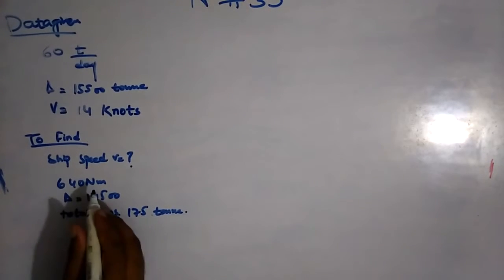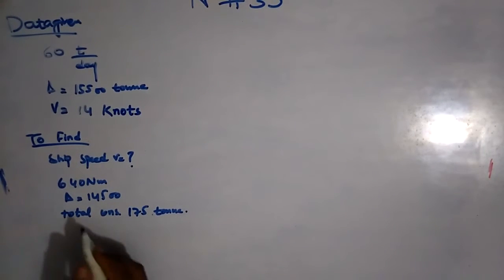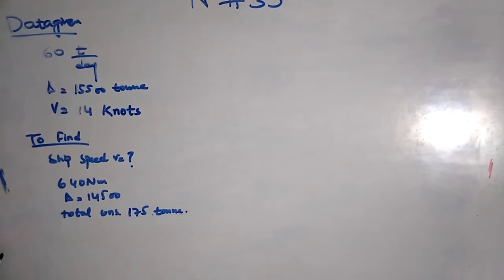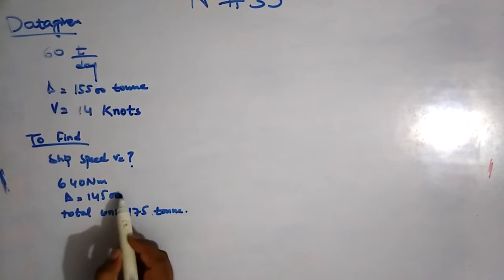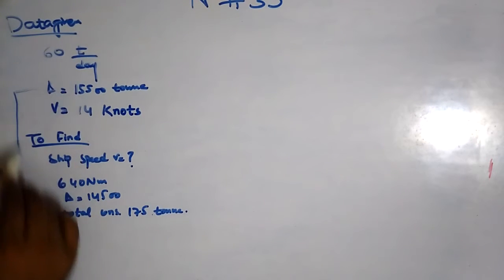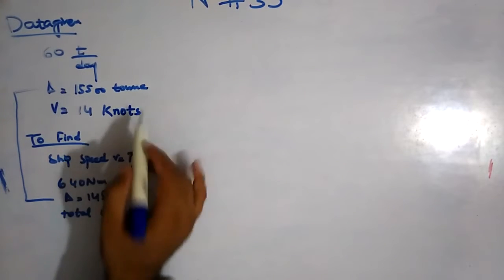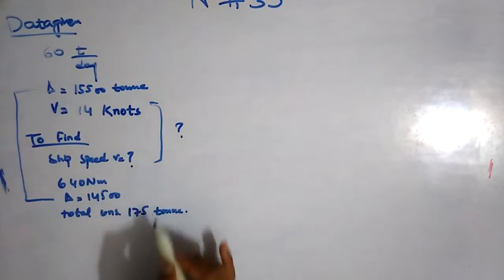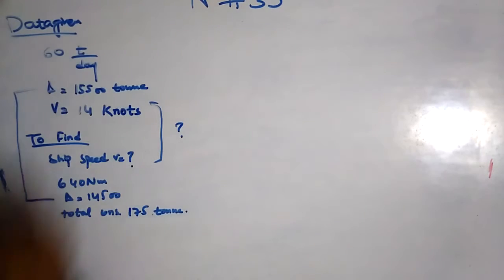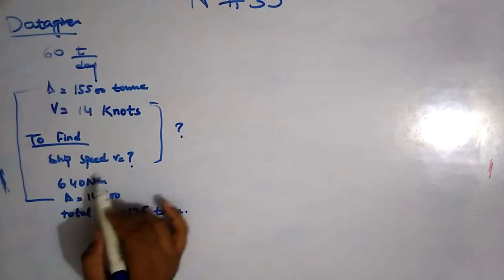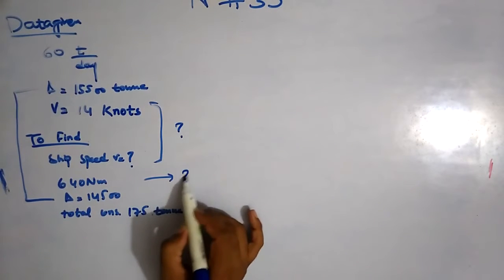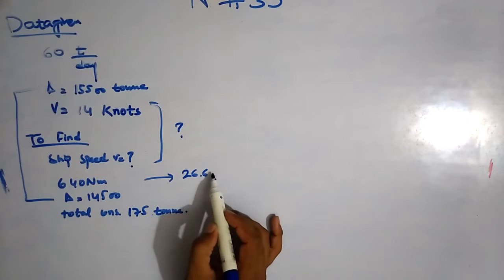Firstly you can find how many days. 640 nautical miles divided by speed. We do not have speed here but this scenario is changed from 15,500 to 14,500. Speed we have to find it. This is the total consumption and this is the consumption for days, so it is giving us 26.6 into V days.